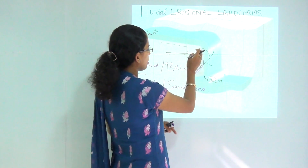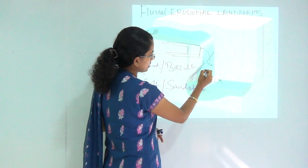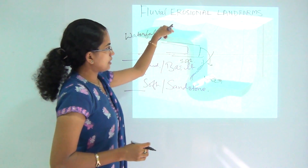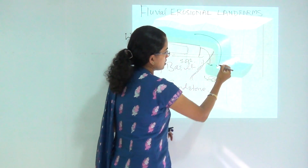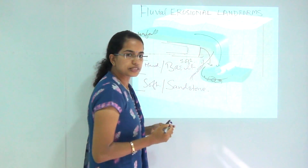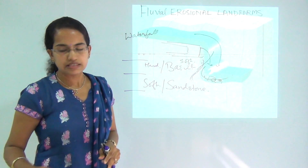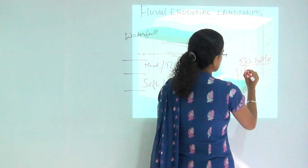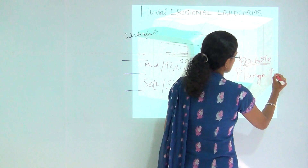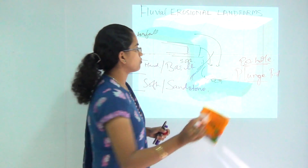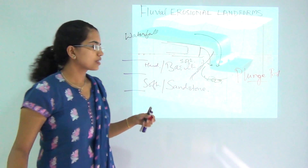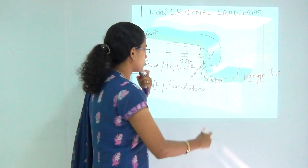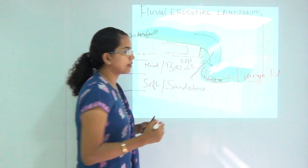In this animation, you can see the hard rock on the top and the soft rock below. When the water falls through, it forms a kind of basin on the lower side. If it is small, we can say it is a pothole. But when this becomes deeper and deeper, we call it a plunge pool. That is the most common terminology used in the case of a waterfall. Whenever there is a waterfall, you will have an accumulation of water on the lower side where the water drains off, and this region is known as the plunge pool region.